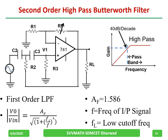For the second order high pass Butterworth filter, you get 40 dB per decade. Comparing with the second order low pass filter, only R and C are changed, and V-out by V-in is given by Af divided by the square root of 1 plus (fl/f) to the power of 4. Remember, whether it is a high pass or low pass second order filter, the gain should be 1.586 — this point should be remembered.